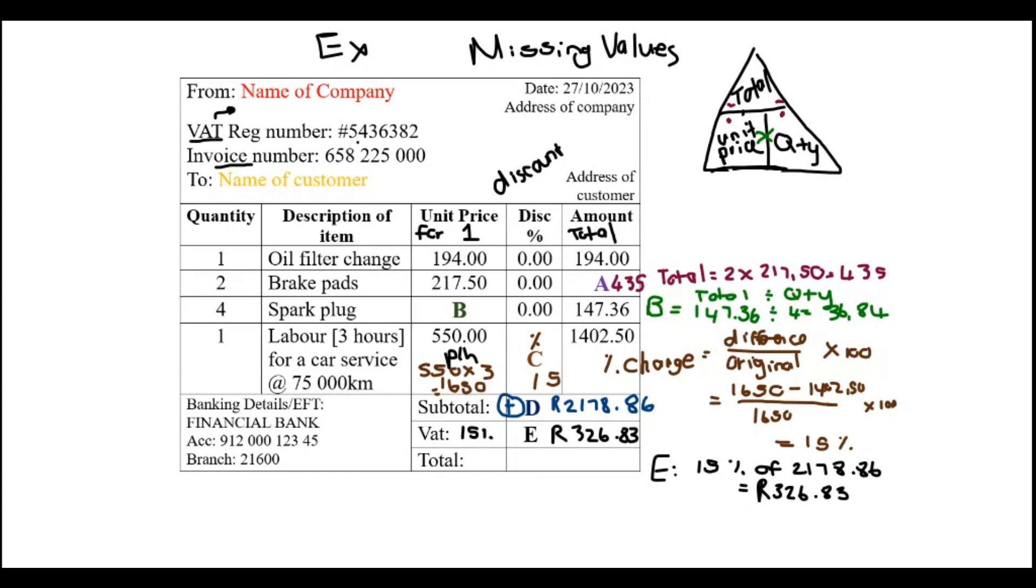Finally, when you want to find the total, it's just the case of taking the subtotal, taking the VAT and adding that. Your whole price - the amount plus VAT - will give you the total. When you add those two, you will see the final amount this person needs to pay: two thousand five hundred and five point six nine. That's the end of our video, please like share subscribe for more.